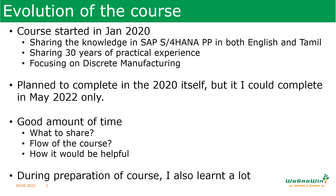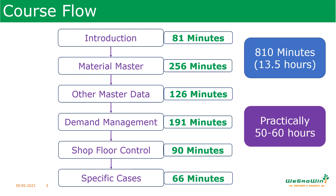The course flow is defined such that you start with an introduction to production planning — four videos totaling 81 minutes. Next, I spent a good amount of time on material master, as it is a very basic requirement for production planning to happen properly. The material master core session itself is around 256 minutes.